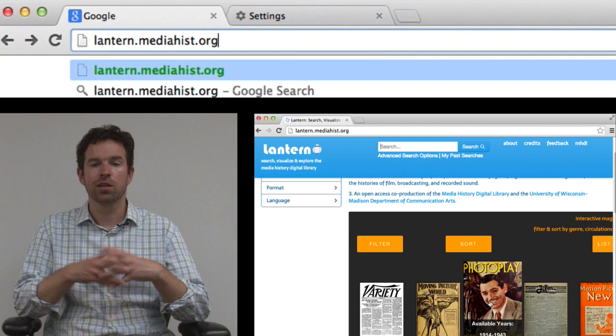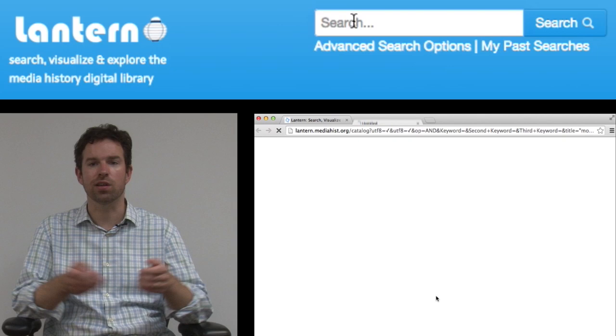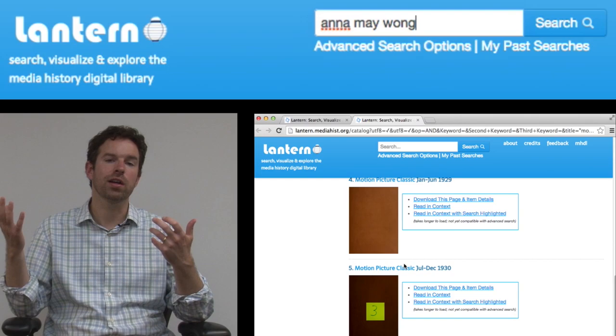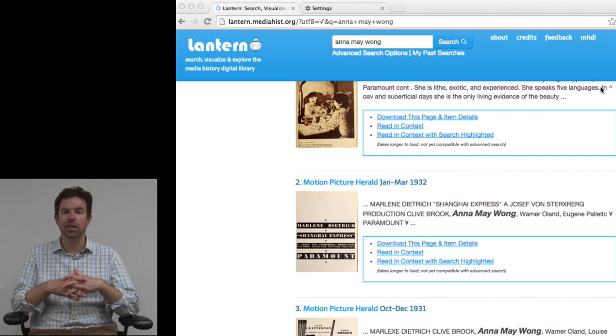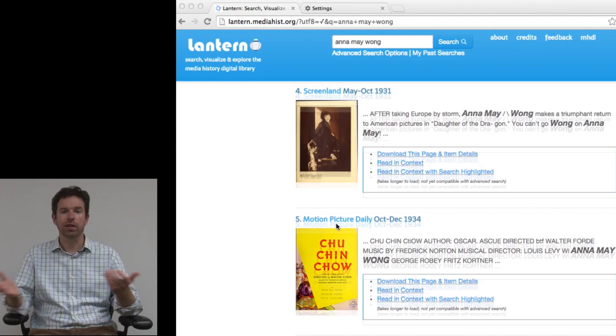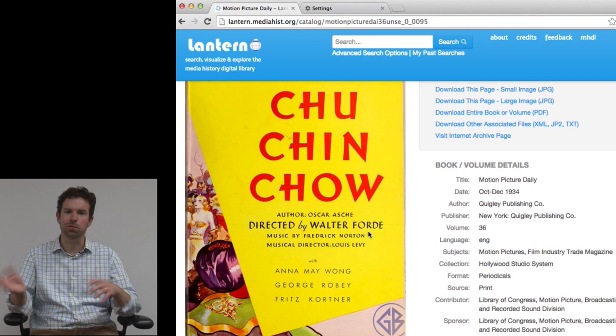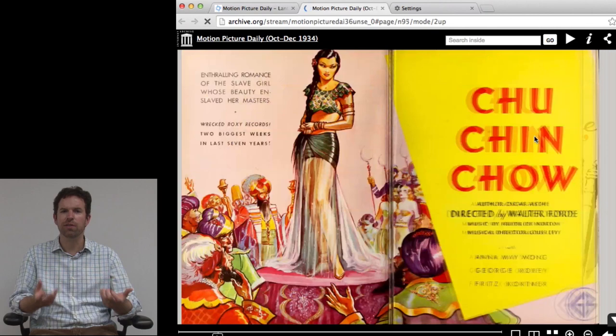And Lantern gives you the capability of running full text keyword searches across the entire collection. So, here, for example, is a search of Anna May Wong. You run the query, and boom, over 2,000 hits related to Anna May Wong. And now, you can scroll through them. You can also, and this part I really like, click through, download the page, but also jump right into the magazine and get to, if not the very page itself that matches within one or two pages, so that you have a good sense of the context.